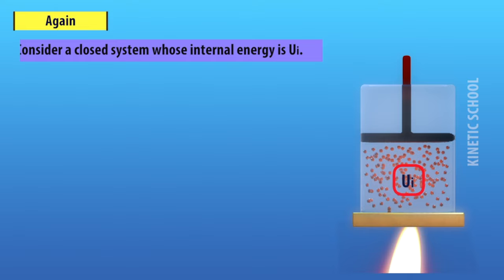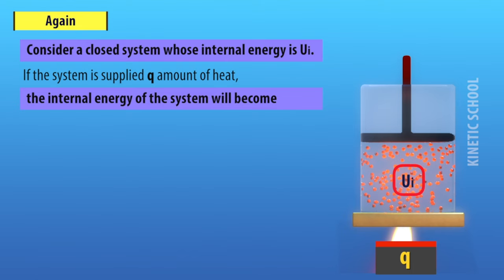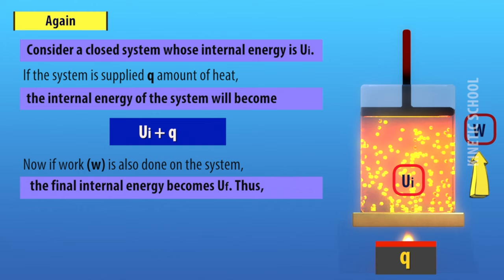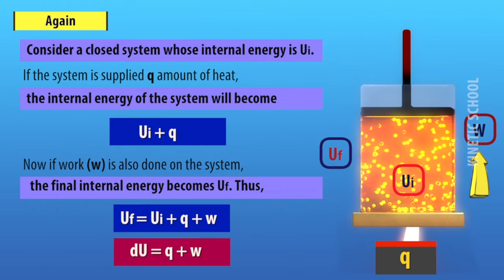Again, consider a closed system whose internal energy is Uᵢ. If the system is supplied Q amount of heat, the internal energy of the system will become Uᵢ + Q. Now if work is also done on the system, the final internal energy becomes Uf. Thus, Uf = Uᵢ + Q + W, or ΔU = Q + W.